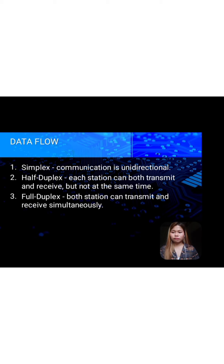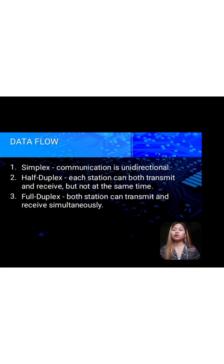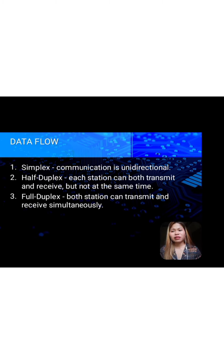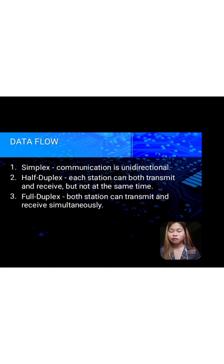In data flow, number one is simplex. Simplex communication is unidirectional — a simplex communication channel only sends information in one direction. For example, a radio station usually sends signals to the audience but never receives signals from them, so a radio station is a simplex channel. It is also common to use simplex channels in fiber optic communication, where one strand is used for transmitting and another for receiving signals.